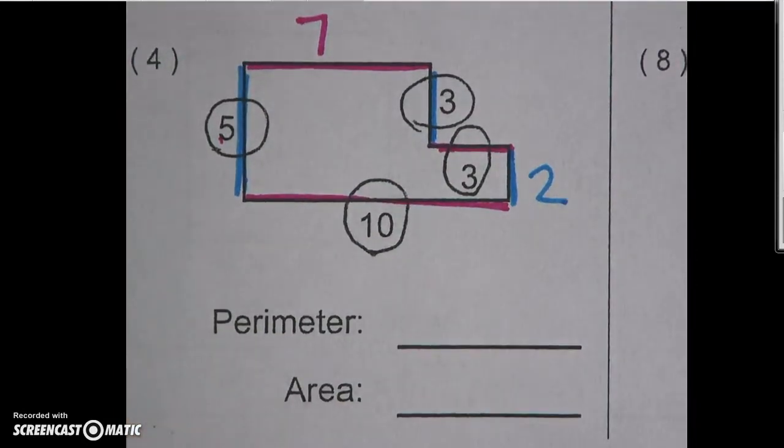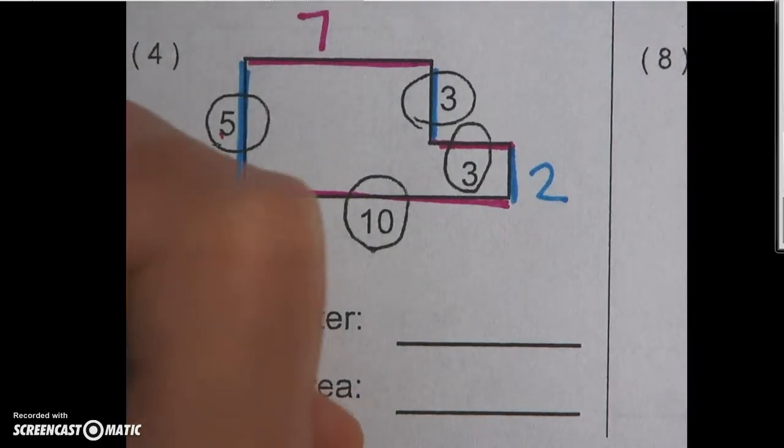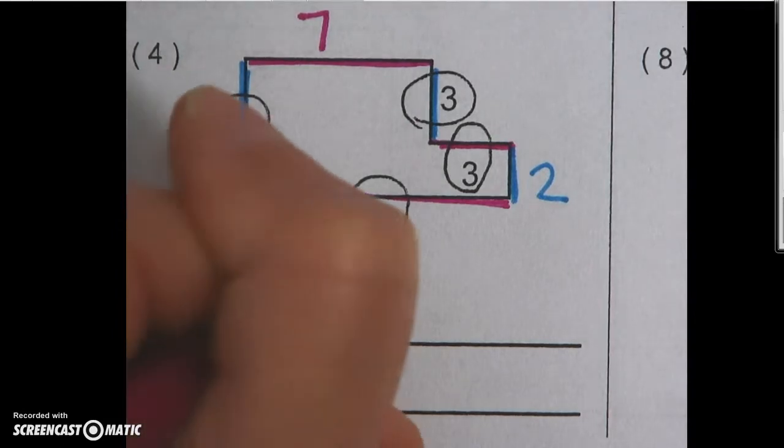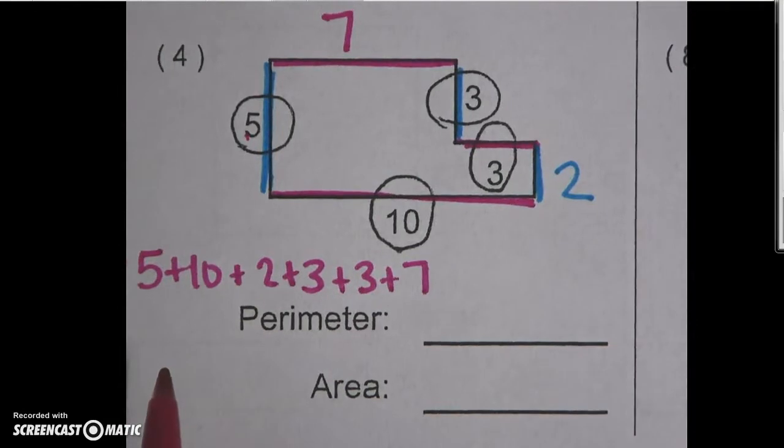Now that I have all my side lengths, I can find the perimeter. So the perimeter I'm going to just add up all my sides. I'm going to do 5 plus 10 plus 2 plus 3 plus 3 plus 7. And when you add all that up, that will give you your perimeter.